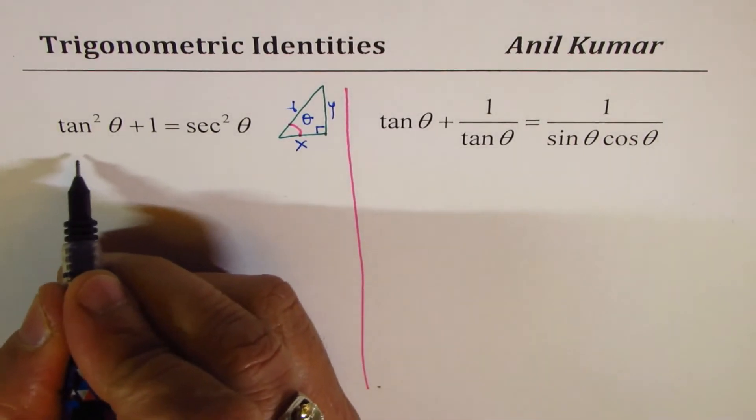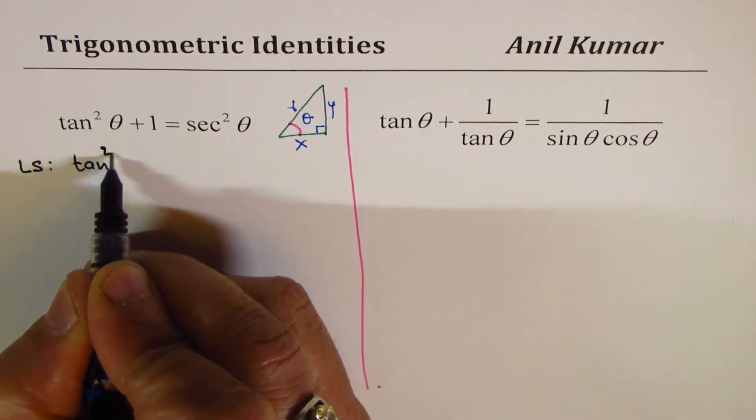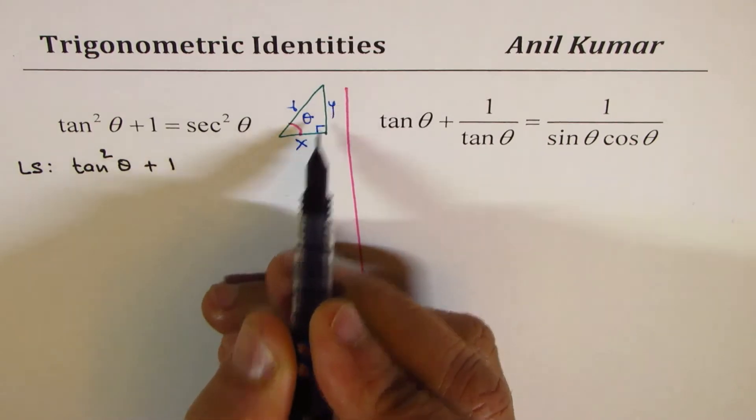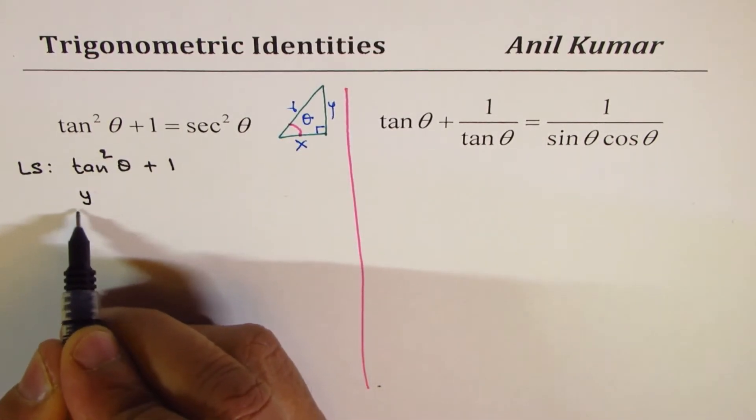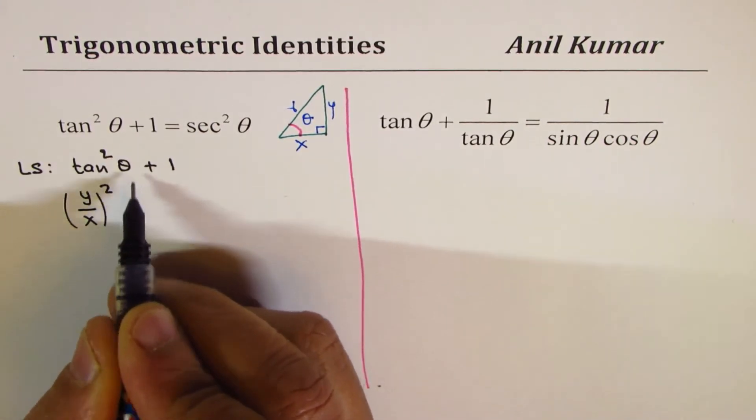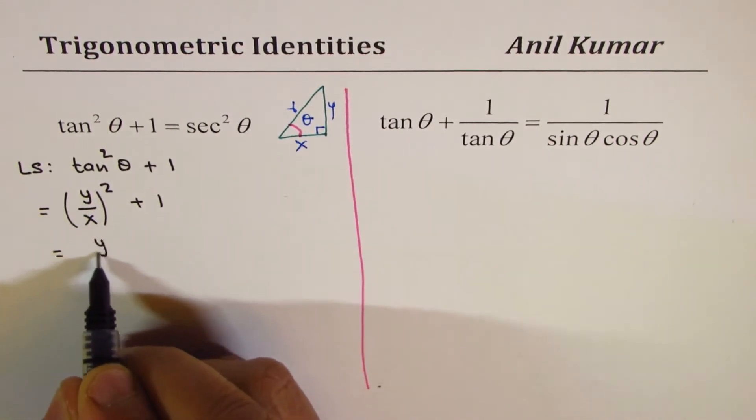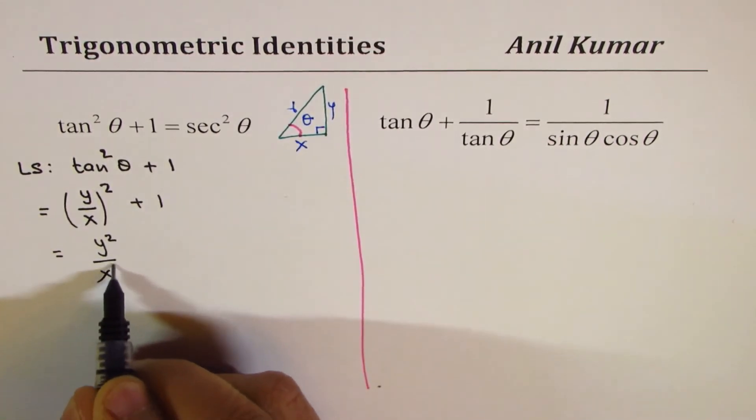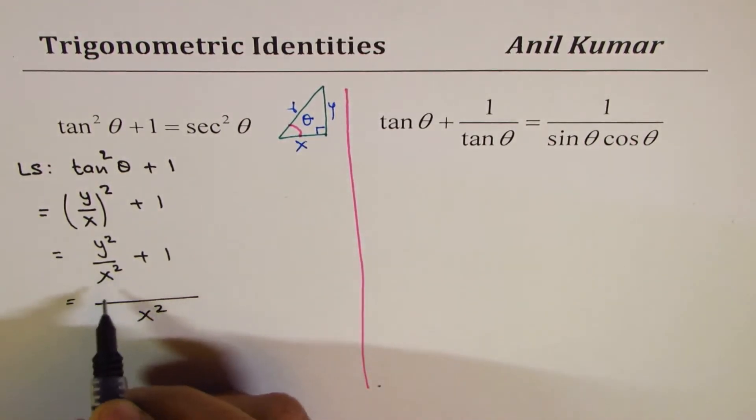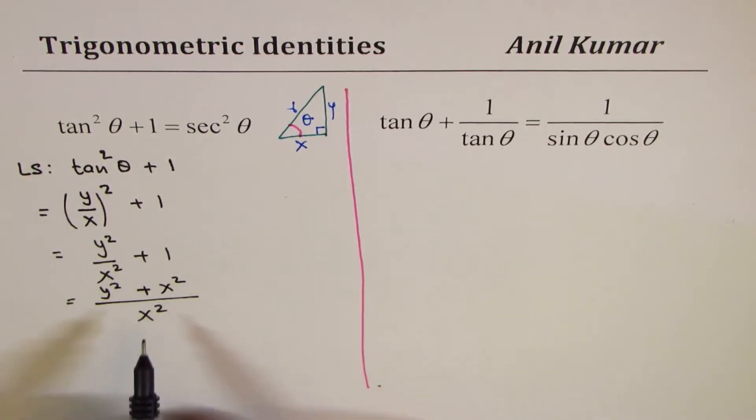So, we will begin from the left side, which is for us tan squared theta plus 1. Now, tan theta is opposite over adjacent side. So, I could write this as y over x whole square. Then, we have plus 1. If I open the bracket, I get y squared over x squared plus 1. Or, with common denominator, we get x squared. We could write this as y squared plus x squared.